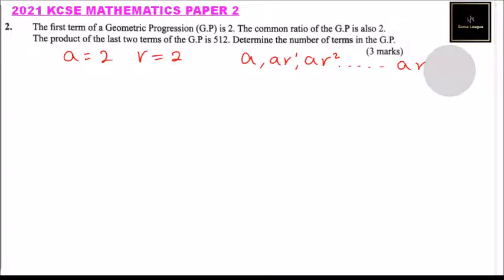It is ar^(n-2), then we have ar^(n-1) to be the last term. So these are the last terms that we have. So we have ar^(n-2) and ar^(n-1).